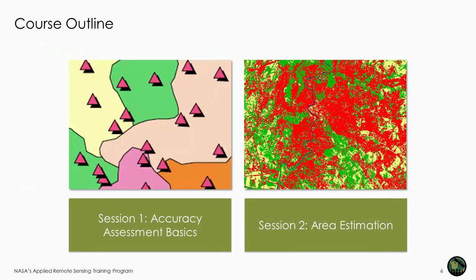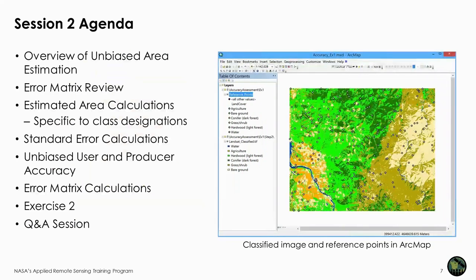Last week, we discussed the basics of accuracy assessment, including how to create an error matrix. This week, you will learn how to use the error matrix to calculate unbiased area estimates of your classes. In this session, we will give you an overview of unbiased error estimation, briefly review error matrices, calculate area estimates along with their standard errors, determine users and producers accuracy with the unbiased area proportions, and compare last week's results with this week's results. After that, we will start with the hands-on exercises and conclude with a short Q&A session.